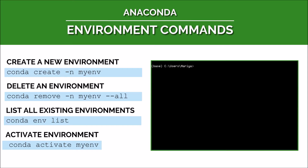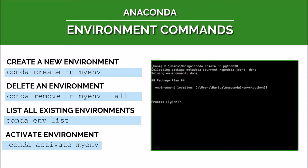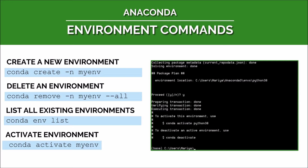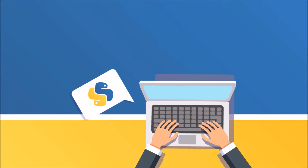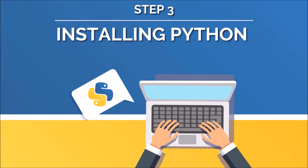To create a new environment we'll type: conda create -n, and then the name you choose for the environment — in my case that would be python38. Then we press Enter to execute and confirm with Y and Enter again. Now we can activate our new environment with: conda activate python38, or whichever name you used. When you see the name of your environment on the very left of your route path, that means you've successfully activated it.